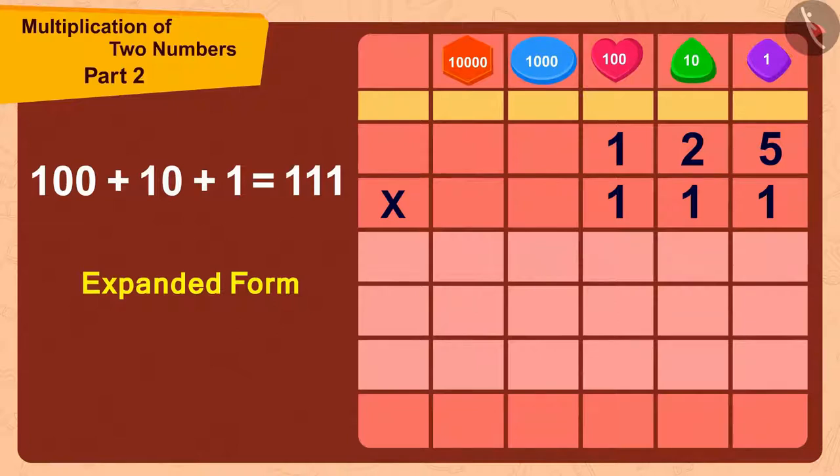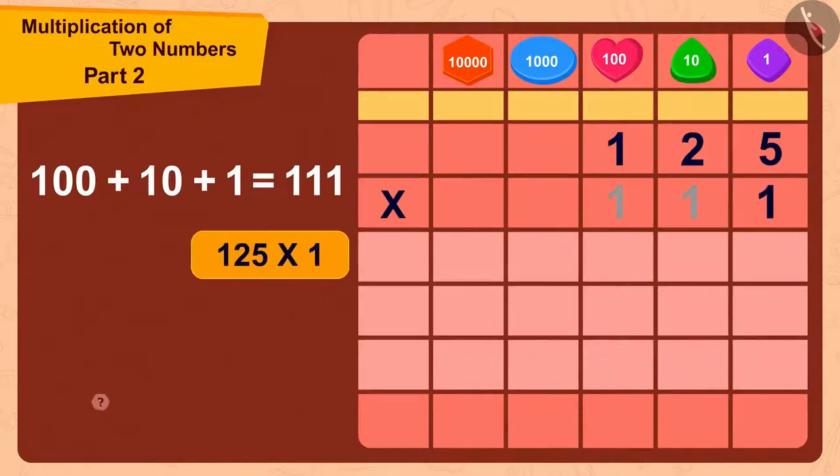First, we will multiply 125 with 1. How much is 125 times 1? Exactly, 125.